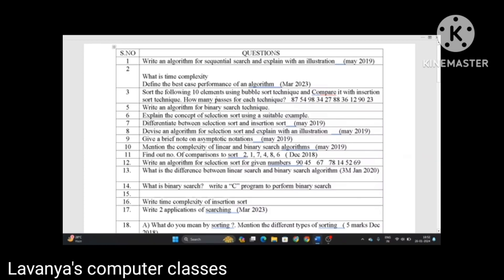Next, sort the following 10 elements using bubble sort techniques and compare it with insertion sort technique. How many passes for each technique? They give 10 elements. Compare from bubble sort and also insertion sort. Next, write an algorithm for binary search technique. These all are from March 2023.